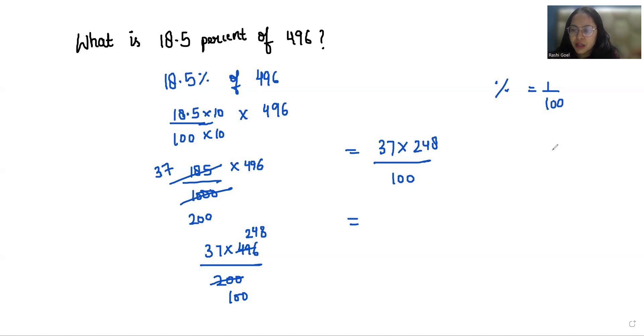We will multiply the numerator, so 248 times 37 is 9176 by 100.